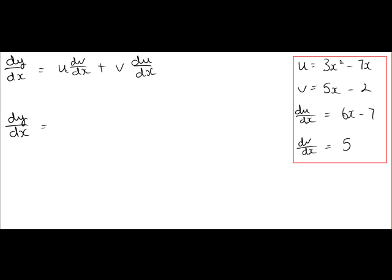We have u by dv dx, so u is 3x squared minus 7x, and dv dx is 5. v is 5x minus 2, and du dx is 6x minus 7.